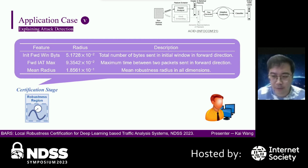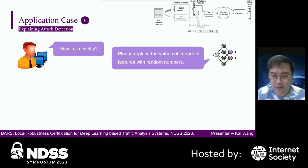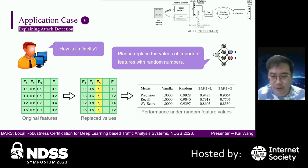The fifth application case of BARS is explaining attack detection. After certifying the robustness of ACID, we can obtain the robustness radius of each feature. We observe that certain features have smaller robustness radii than the mean robustness radius. Therefore, the classification results are sensitive to these features, and we can treat them as important features. To evaluate the fidelity of the explanation, we replace the values of these important features with random numbers. Given a set of samples, we find that ACID performs incorrectly after replacing important feature values, proving the fidelity of our explanation.